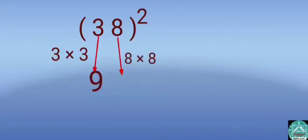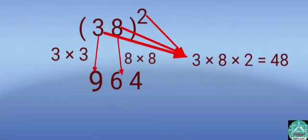Let us find the square of 38. 3 squared equals 9. 8 squared equals 64. Now multiply 3 by 8 by 2. 3 times 8 times 2 equals 48.